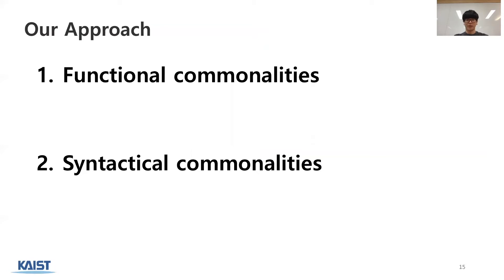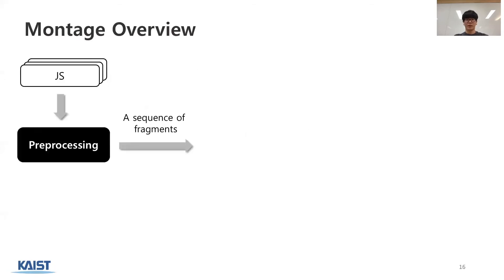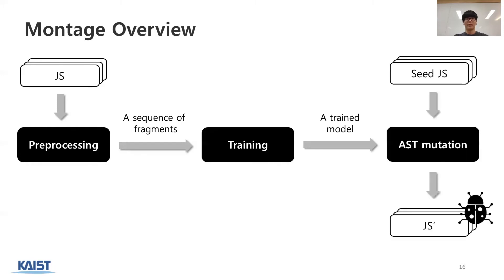Based on the two observations from the preliminary studies, we designed a new fuzzer Montage. To address functional commonalities, Montage leverages the functionality of existing JS tests that previously triggered JS engine bugs by mutating them. And to address syntactical commonalities, Montage models the relationships between AST subtrees. Montage works as follows. Given a set of JS code, it pre-processes JS code into a sequence of fragments. Then, it trains a neural network language model with the pre-processed sequences. Finally, under the guidance of the trained model, it mutates a seed JS test to generate bug triggering JS code.